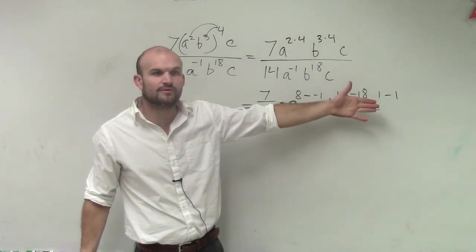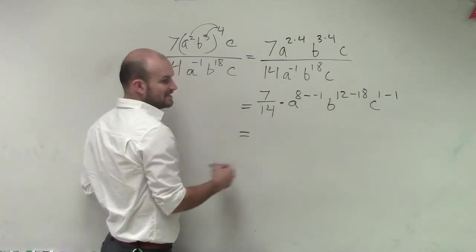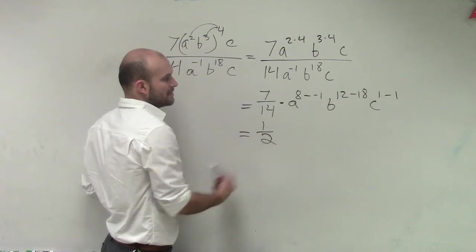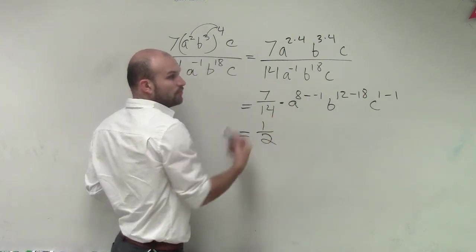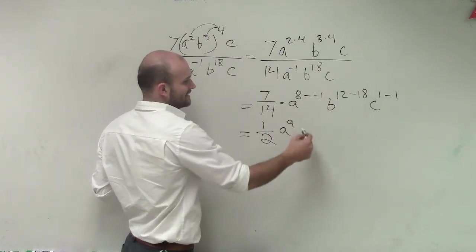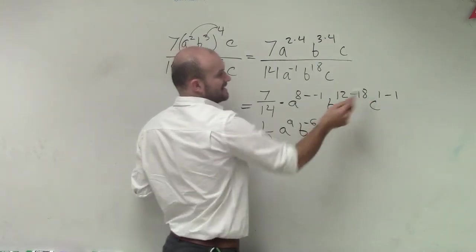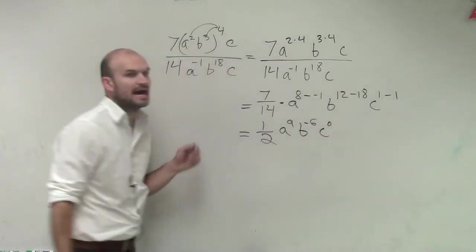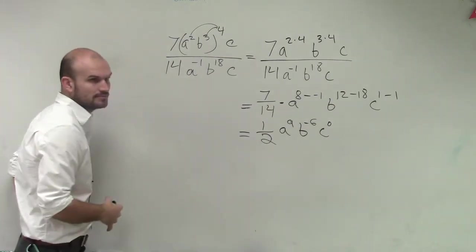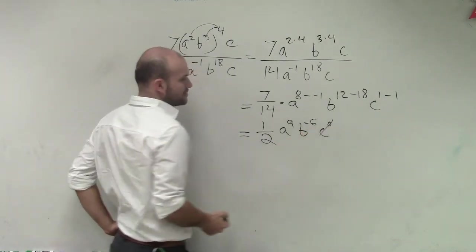Then what we're going to do is we're going to determine whichever ones are negative are going to go in the denominator. All right, so 7 fourteenths reduces down to 1 half, right? So we're going to keep a 1 in the numerator, a 2 in the denominator. 8 minus a negative 1 is a to the 9th. 12 minus 18 is b to the negative 6th. And then c, 1 minus 1 is c to the 0 power. Now, any number raised to the 0 power is going to equal 1. And I'll go through that for you guys in a second, all right? Therefore, that just goes to 1.